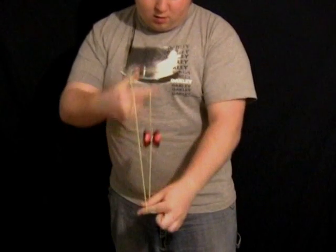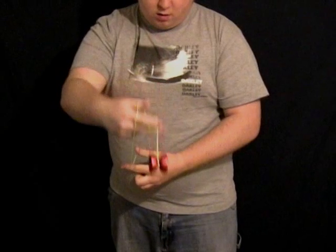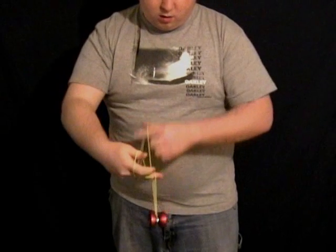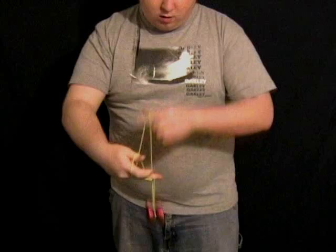Lower your non-throw hand while popping the yoyo up and towards you and bring your non-throw hand towards your body. This will change the yoyo from being on the front of the string to the back of the string.